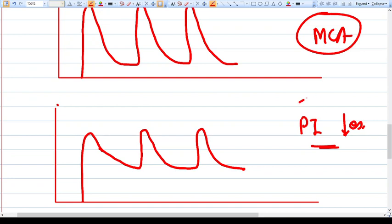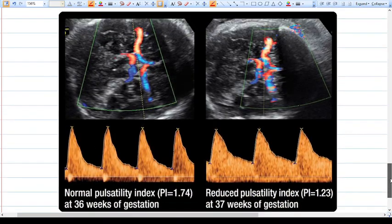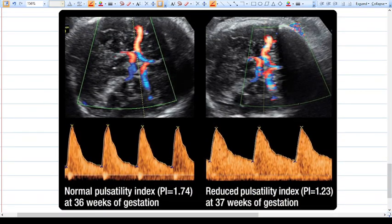It will show that the resistance in the brain vasculature decreases. This is the real picture of MCA Doppler. Here you see the normal pulsatility index is 1.74. Here is the systolic wave, here is the diastolic wave. Here you can see the systolic wave was as it is but the diastolic wave has been increased.